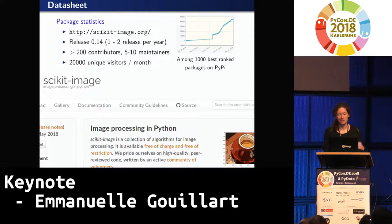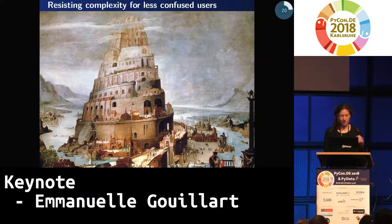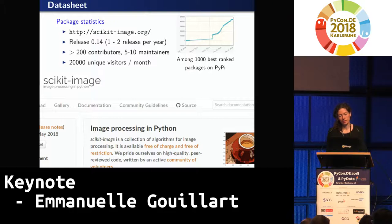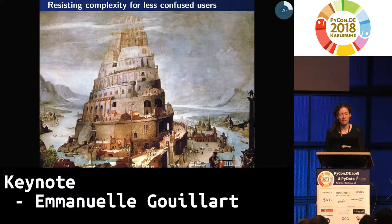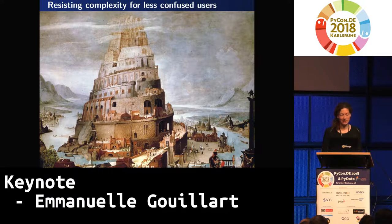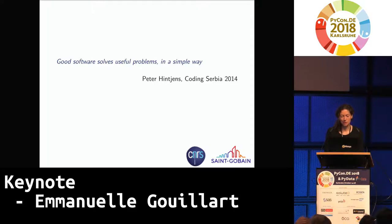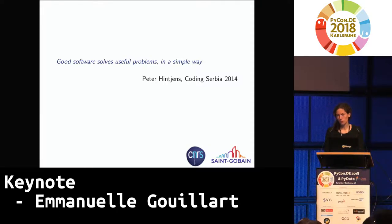Nobody is paid to work full-time on scikit-image — it's mostly people working on their free time. How do we make sure that for these 20,000 users, life is as easy as possible? The main lesson I learned during these years of contributing is that it's hard to resist complexity because everybody wants to build very large architectures with very fancy tools, but the simpler, the better. I like to quote the regretted Peter Hinton who said: good software just solves useful problems in a simple way. Good software is not fancy. Good software is not elegant. It solves problems in a simple way.